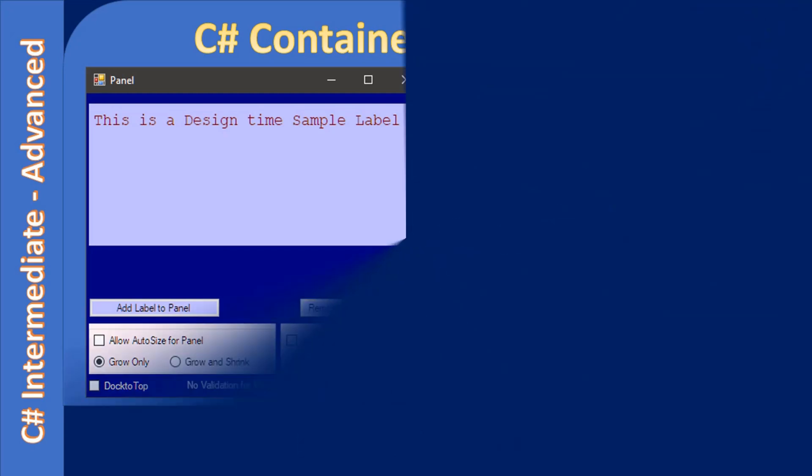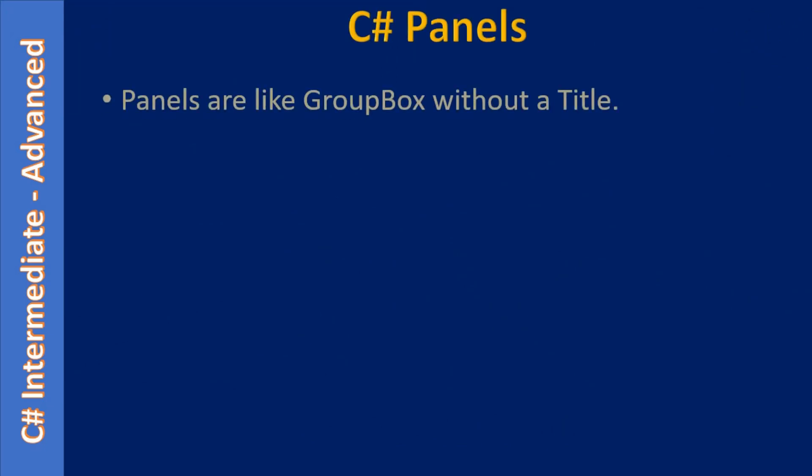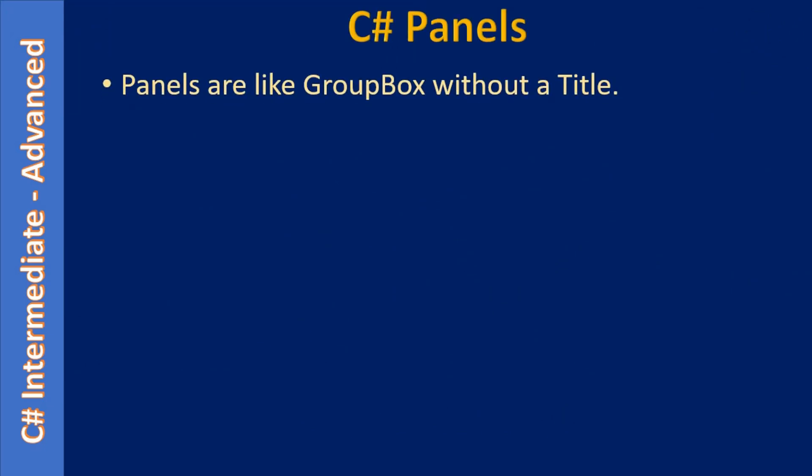We will also learn about scroll bar support. Panels are like a group box without a title. In the previous picture, in the top portion of the form we had a panel, and the panel also had a label inside it, but the panel does not have any title like a group box. A group box comes with a title and an etched border, but a panel comes without any title.